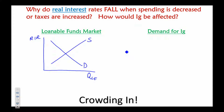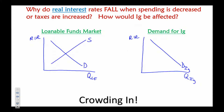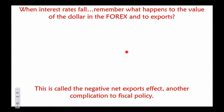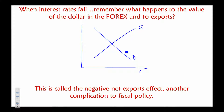How does contractionary policy affect the loanable funds market? The U.S. government is the largest borrower in the history of the world, so when they change their borrowing it has a big impact. When the government is curing inflation, it demands less loanable funds, which drives interest rates lower. Lower interest rates increase the quantity of investment demanded — we call that crowding in.